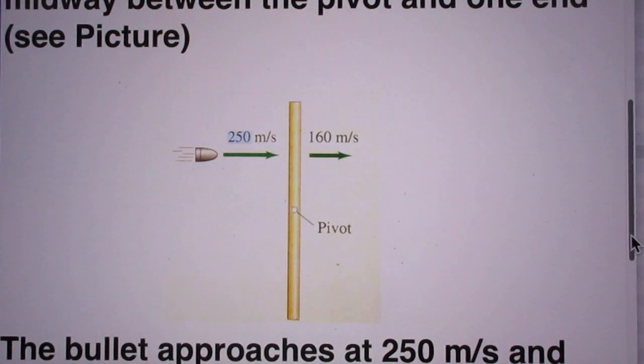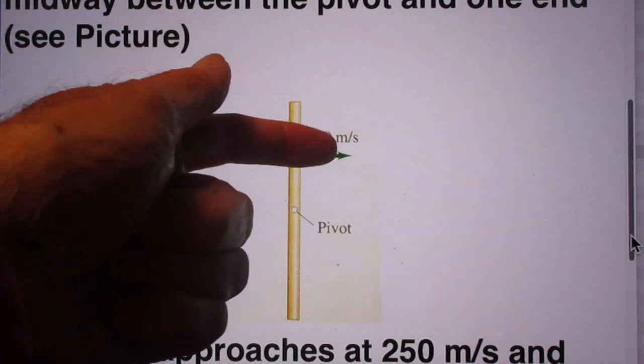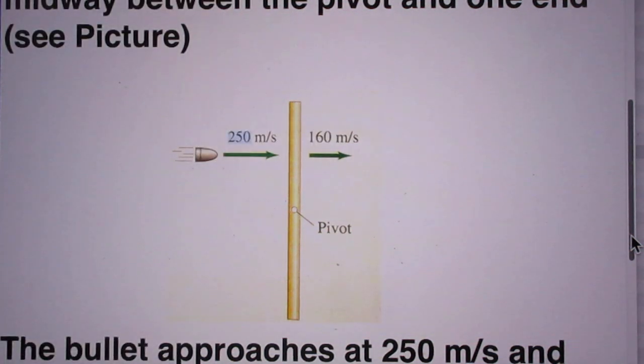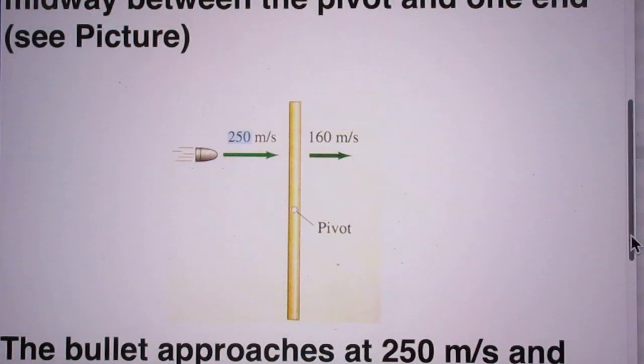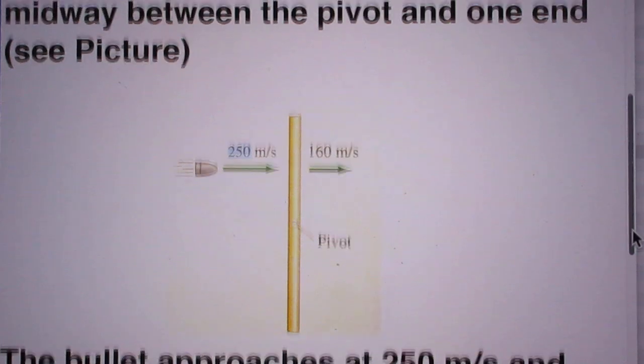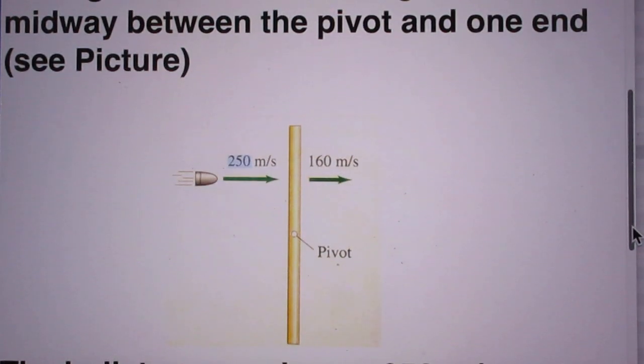So here is the pivot, and you see here the bullet is shot through the rod midway between the pivot and one end.